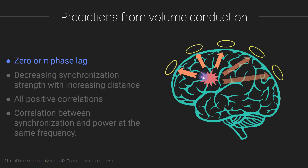It is slightly more complicated than truly instantaneous — the electrons move at the speed of light, but the distance traveled and the medium affect things, and it depends on frequency. However, even if there are tiny delays between the electrical potential reaching one electrode versus another, those delays are much much smaller than what we measure with our recording system. For all intents and purposes, volume conduction is instantaneous — the electrical activity from a source reaches all electrodes at exactly the same time, so synchronization will be zero phase lag, or pi phase lag if the electrodes are on opposite sides of the dipole.